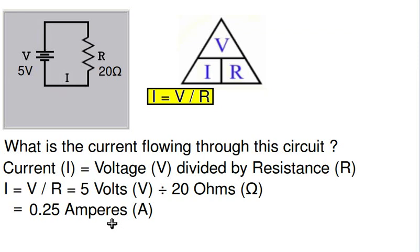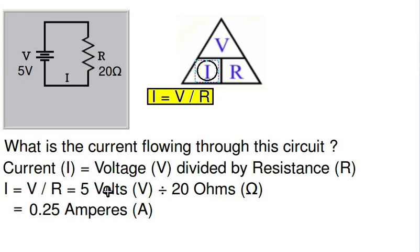Again the same circuit, but this time we know the voltage and the resistance and want to find the current. Ohm's law tells us that current I equals V over R — current equals voltage divided by resistance. Our voltage is 5 volts divided by our resistance of 20 ohms. 5 divided by 20 is 0.25, or one quarter of an ampere.